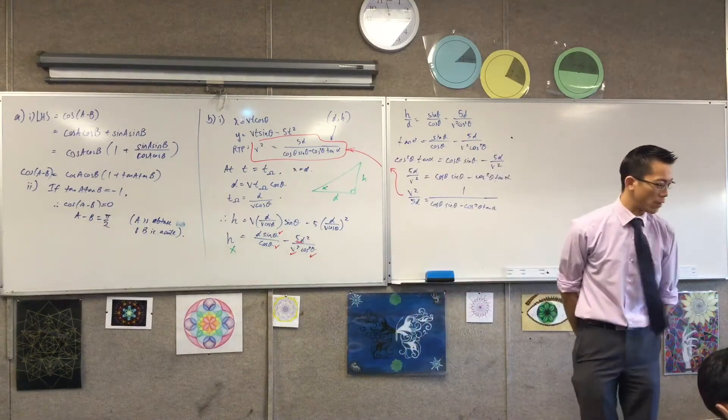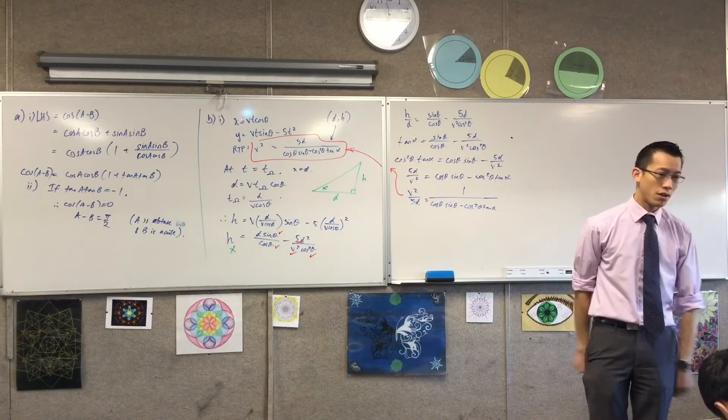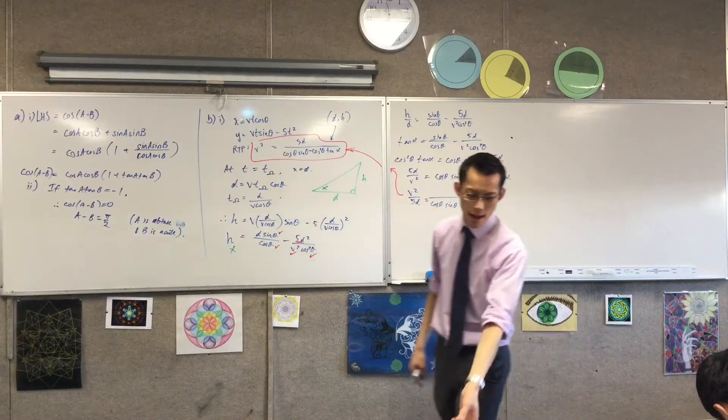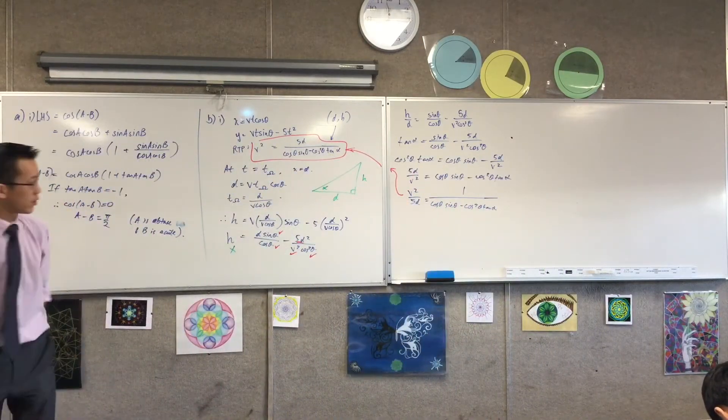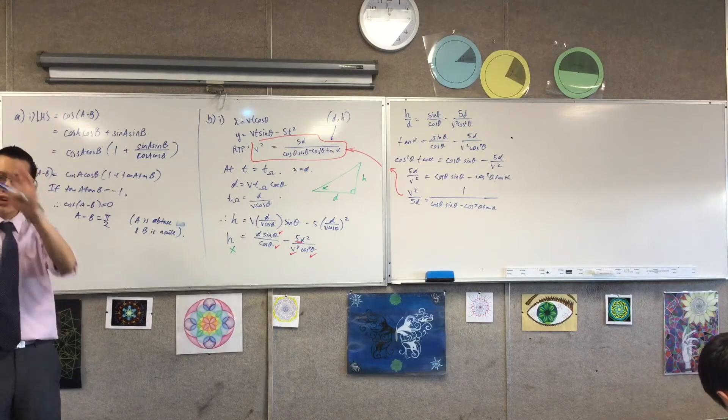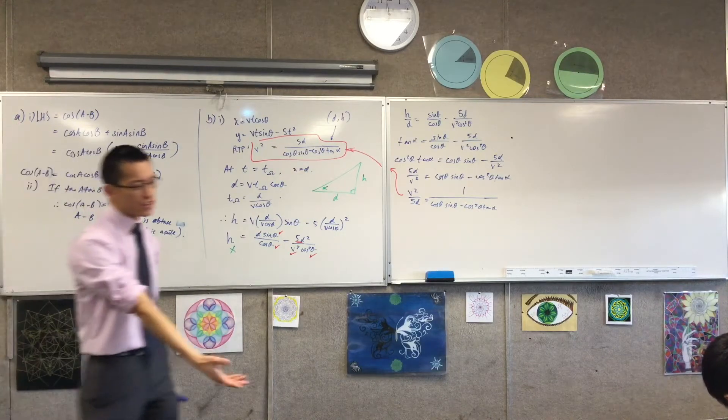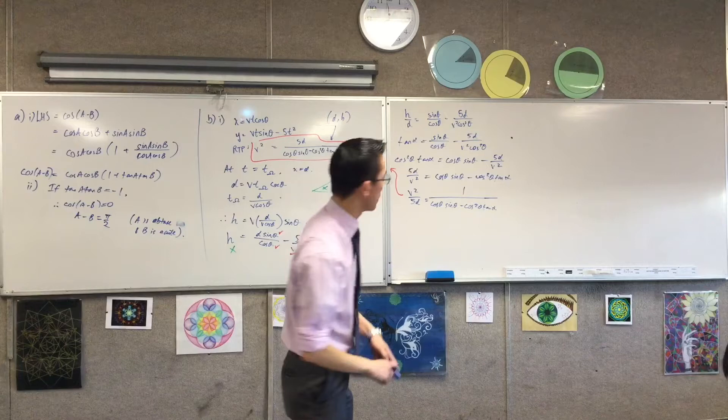They're asking us to understand the behavior of this function here, particularly the square root of the function, because they want the velocity, not the square of velocity, as the angle that you actually shoot at changes in relation to the angle of the hoop. So let's look at part two.